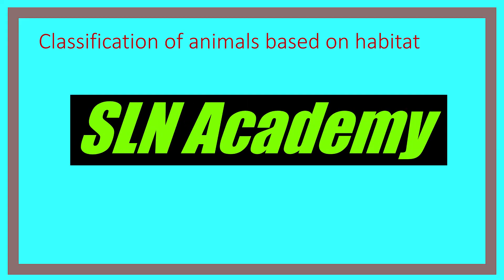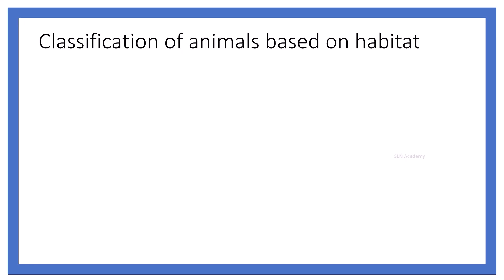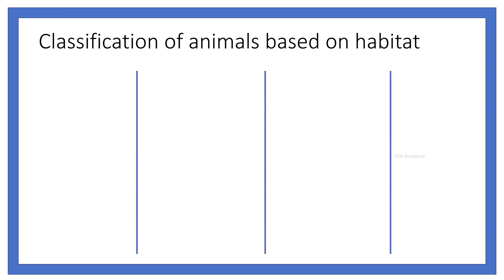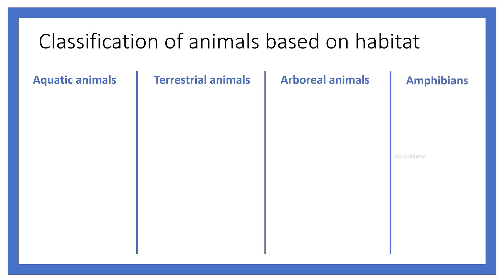Classification of animals based on habitat. Based on living habitat, animals are classified into four groups. They are aquatic animals, terrestrial animals, arboreal animals, and amphibians.